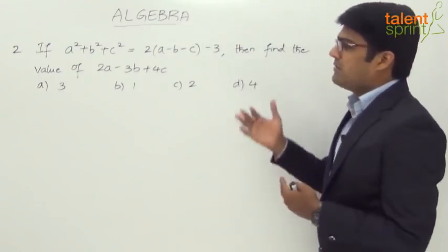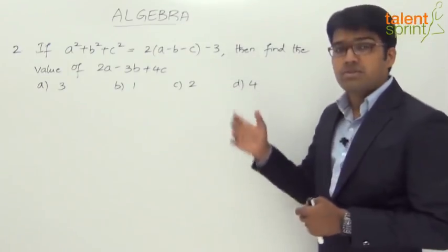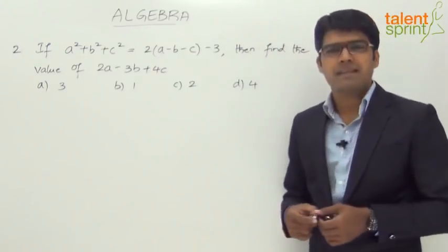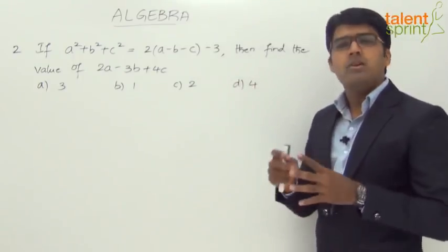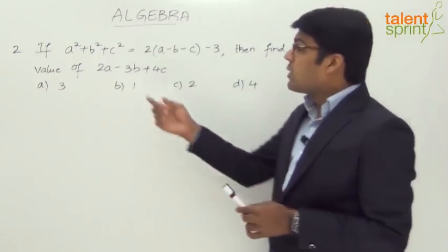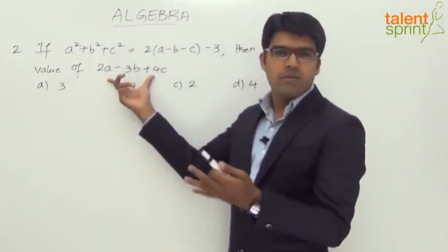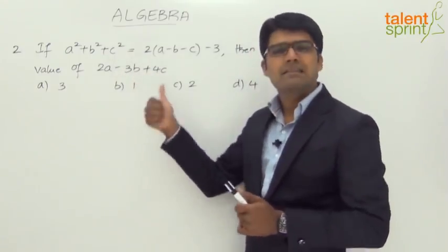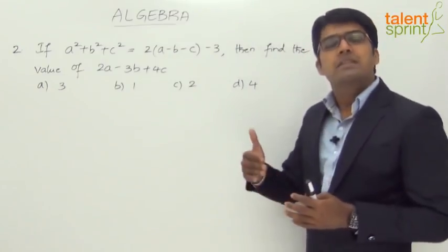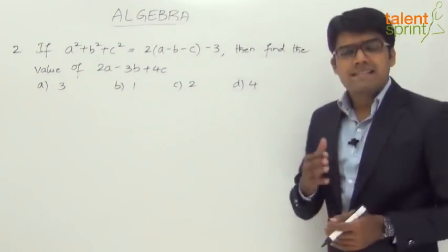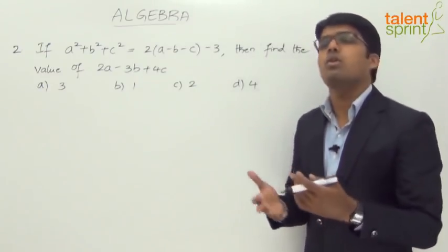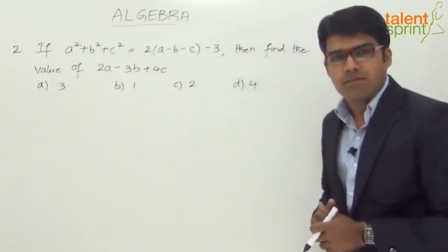This is a typical one. If you look at the given equation, a² + b² + c² = 2(a - b - c) - 3, it doesn't really correlate with any of the standard identities we have looked at. And the required value, 2a - 3b + 4c, is also not a general form. So let's see if we can get the values of a, b, c directly using some logic, or if we need another method.